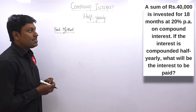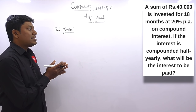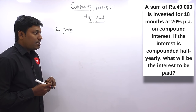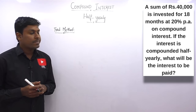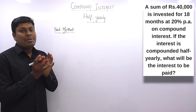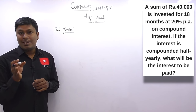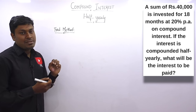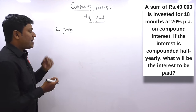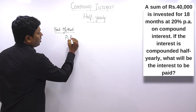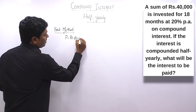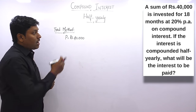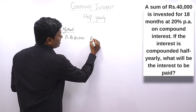Question 2: A sum of rupees 40,000 is invested for 18 months at 20% per annum compound interest. If the interest is compounded half-yearly, what will be the interest to be paid? Given data: principal = 40,000; rate = 20% per annum; time = 18 months.